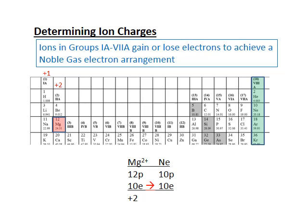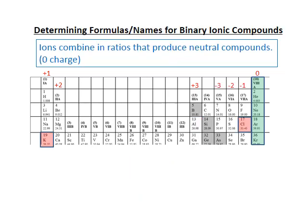Magnesium is element number 12, so losing two electrons allows it to achieve a noble gas electron configuration, giving it a plus two charge. Aluminum has three more electrons than neon, so once it gets down to 10 electrons it has a positive three charge.